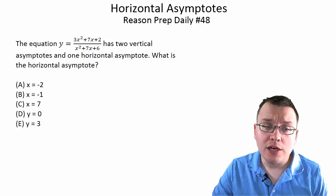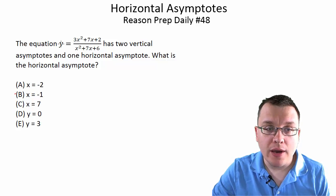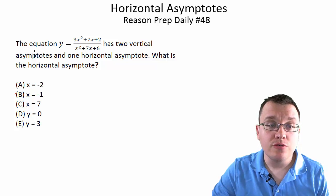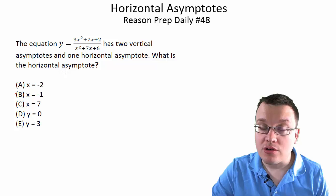So one of the hardest questions, but if you know how to approach it, it's actually not that bad at all. So the equation, this, has two vertical asymptotes and one horizontal asymptote. What is the horizontal asymptote?